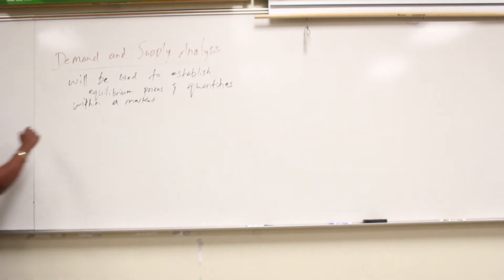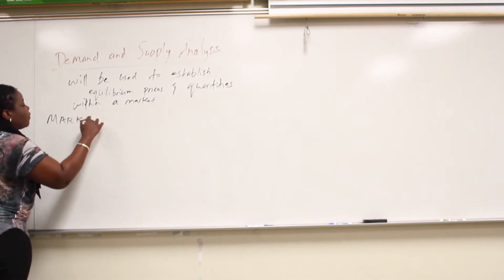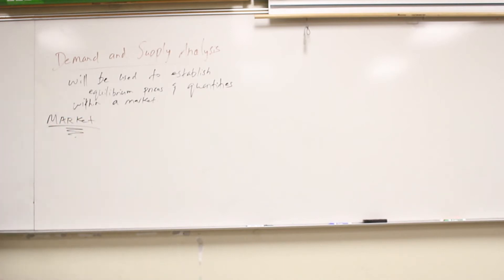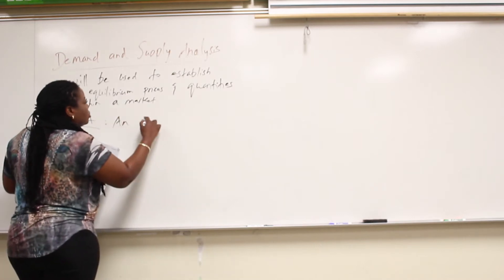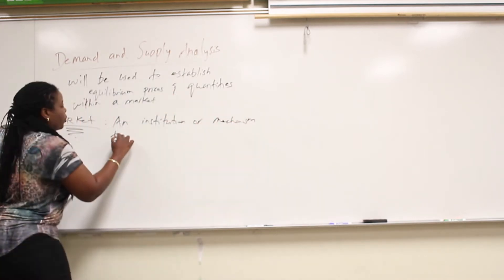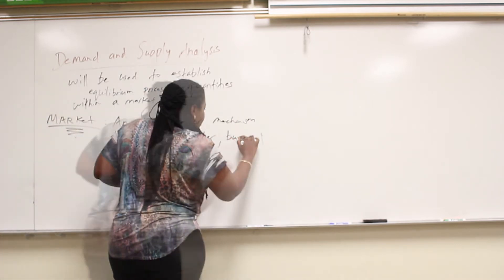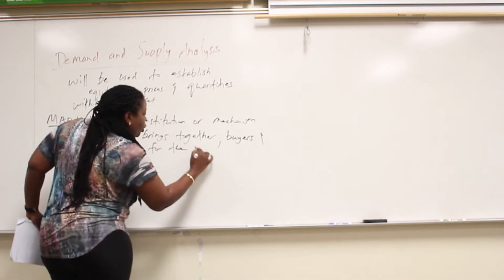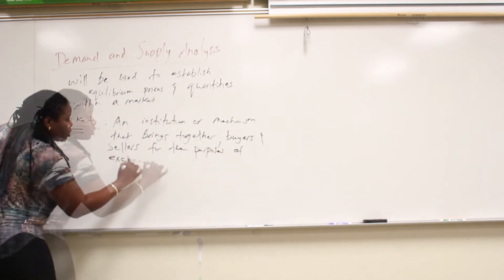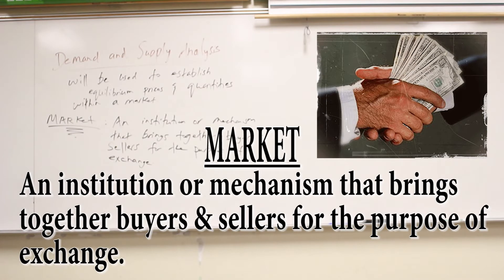Now a market in econ is very comprehensive and specific. So a market in econ, formally what we mean is a market is an institution or mechanism that brings together buyers and sellers for the purposes of exchange. Any institution or mechanism where we have buyers and sellers meeting to exchange some goods, service or resource, we consider that a market.